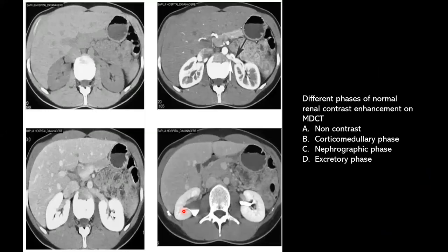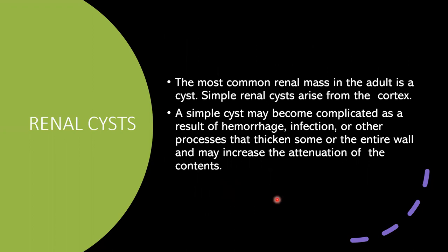These are the normal different phases of renal contrast enhancement on MDCT: non-contrast enhancement, corticomedullary phase enhancement, nephrogenic phase enhancement, and excretory phase enhancement.